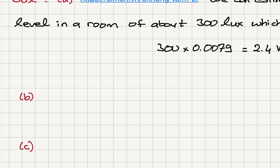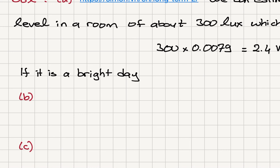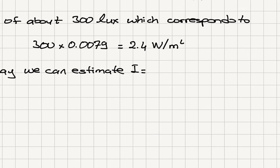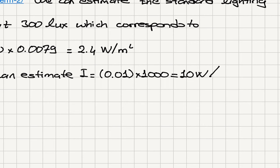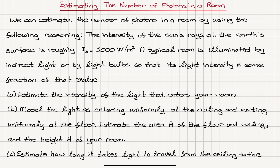Now let's say that it's a bright day — not the standard lighting level in a room. We can estimate the intensity in the room to be a fraction of the sunlight intensity, let's say 0.01 times 1000, which gives us 10 watts per meter squared. So this is our estimate of the intensity of the light that enters our room.